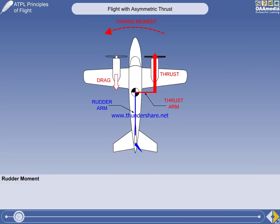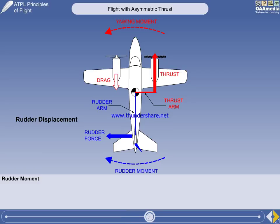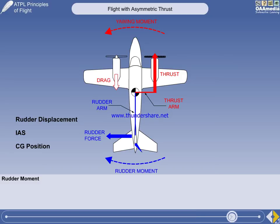If rudder is applied to counter the yaw, it will generate a moment which is the product of the rudder force, multiplied by the distance between the rudder center of pressure and the CG. At this initial stage, the pilot's ability to counteract the asymmetric yawing moment depends on the rudder displacement, which affects the rudder force; the IAS, also affecting the rudder force; and the CG position, affecting the rudder arm.